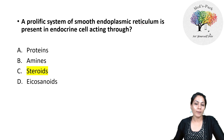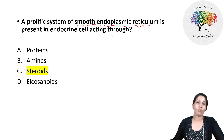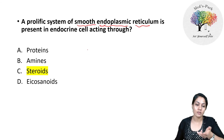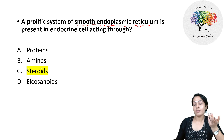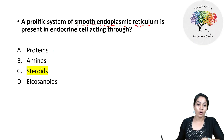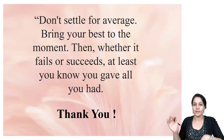A prolific system of smooth endoplasmic reticulum is present in endocrine cells acting through which mechanism? Smooth endoplasmic reticulum is involved in lipid and steroid synthesis. While it may also help in post-translational modification of proteins, the most appropriate answer here is steroids.